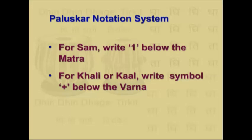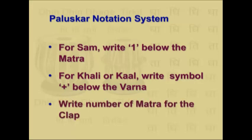For khali in the Paluskar system, you have to write a symbol of plus. Where claps are concerned in talas, you have to write the number of the matra to which you are giving the clap. For example, if on the fifth beat there is a clap, then you have to write the number five below that beat.